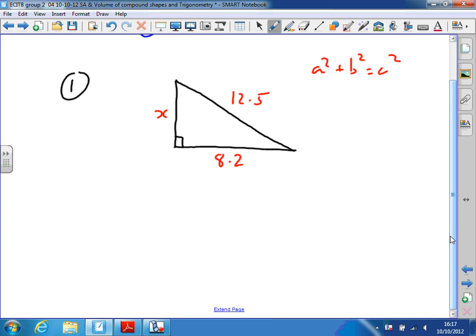x equals the square root of 12.5 squared minus 8.2 squared. Because I might just as easily remember this as a equals the square root of c squared minus b squared. I'm after one of the shorter sides.